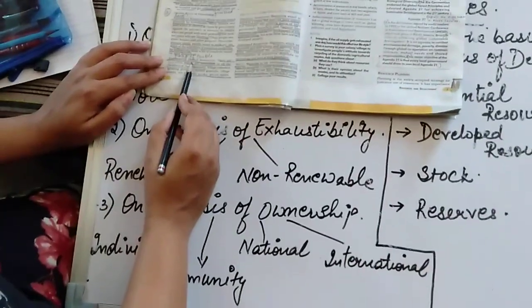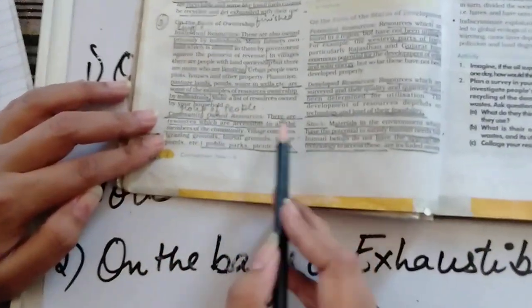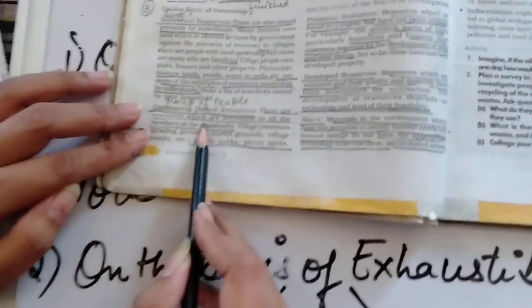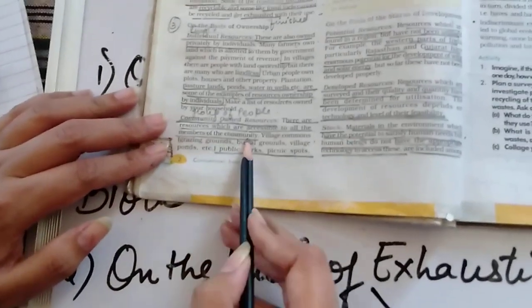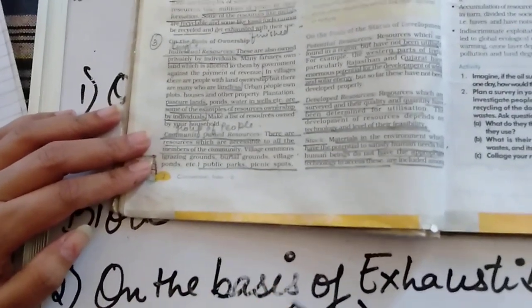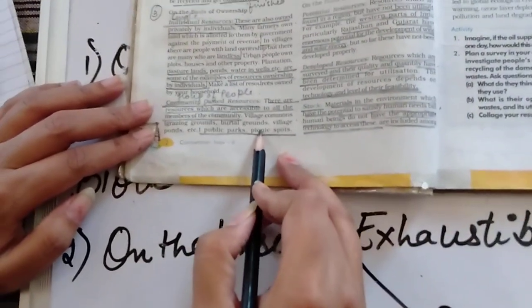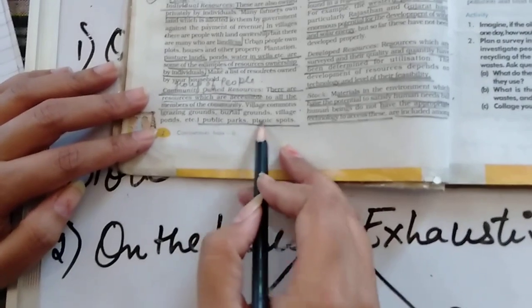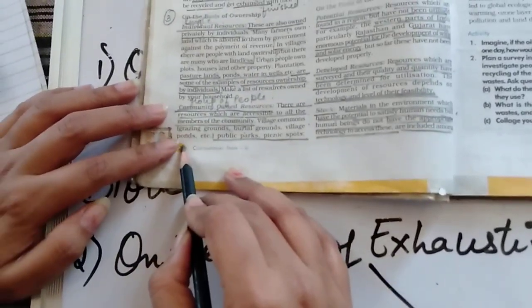Community, that means group of people. There are resources which are accessible to all the members of the community. For example, if I talk about villages, that is burial grounds, village ponds, etc.